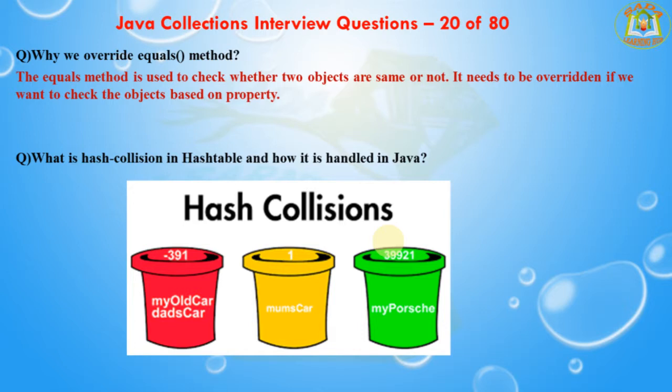The next question is: what is a hash collision in hash tables and how is it handled in Java? Two different keys with the same hash value is known as a hash collision. The two different entries will be kept in a single hash bucket to avoid the collision.